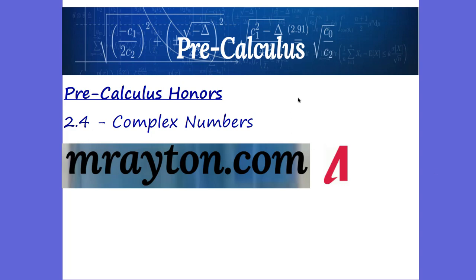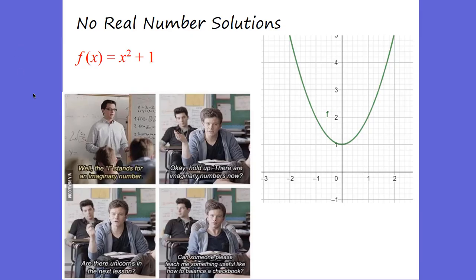Today we're going to be talking about some new numbers, which we call the imaginary unit, or i. Sometimes when we have a quadratic like this one, f of x equals x squared plus 1, you can see this graph — there are no real solutions. It doesn't cross the x-axis at all. So what we have are non-real solutions, or what we call imaginary numbers, or complex numbers.